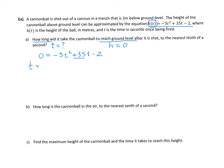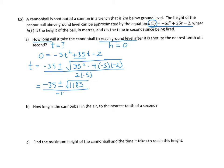Our t will equal negative b, so negative 35, plus or minus the square root of b, 35 squared, minus 4 times a, which is negative 5, times c, which is negative 2, all divided by 2 times the a. So we're going to end up with t being equal to negative 35 plus or minus the square root of 1185, divided by 2 times negative 5 is negative 10.